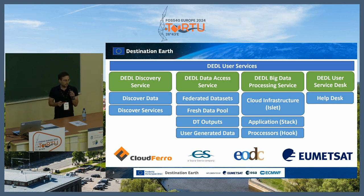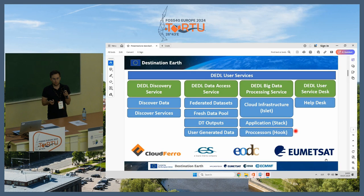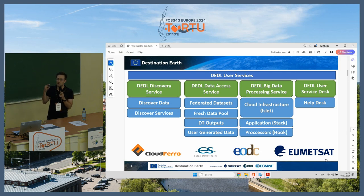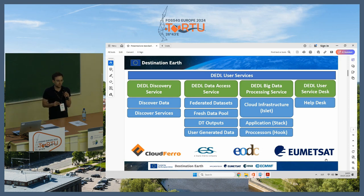Four layers of services are included within the DDL, two of which are concerned with data: Discovery Service and Data Access Service. Discovery Service is dedicated to all users — you don't even have to be registered to search collections and metadata. Data Access Service is about searching items, downloading items, and assets. The third layer is Big Data Processing Services, so-called Edge Services, which include Cloud Infrastructure, Applications, and Processors. The fourth is Help Desk and User Service Desk.